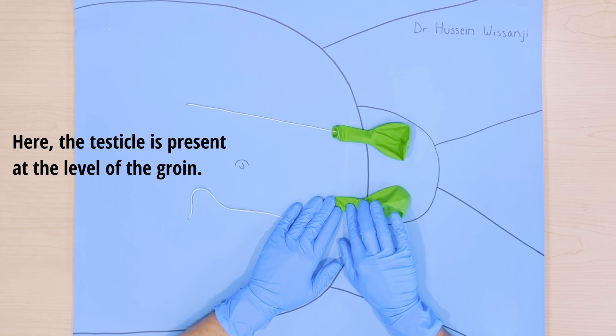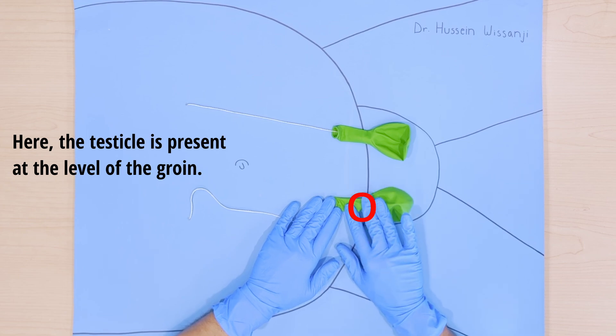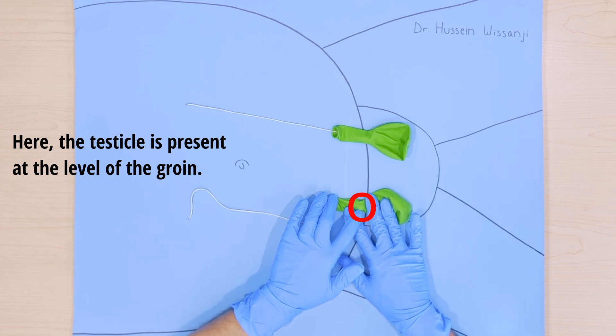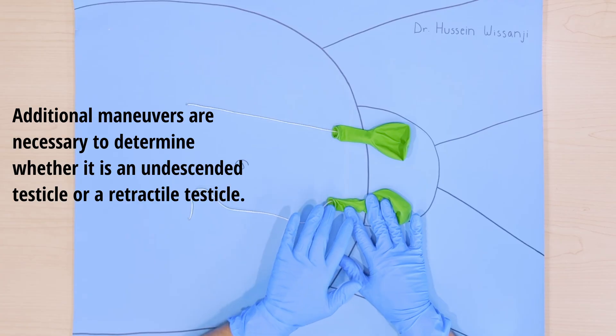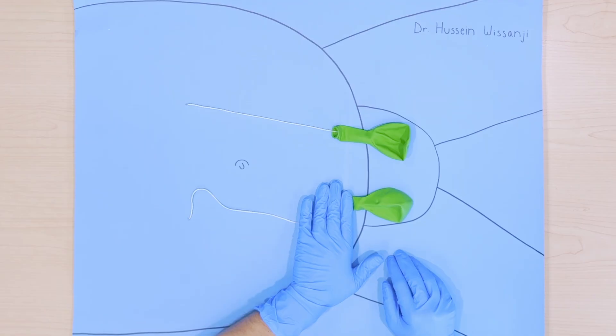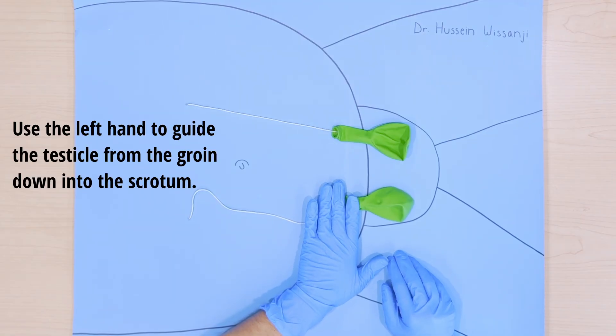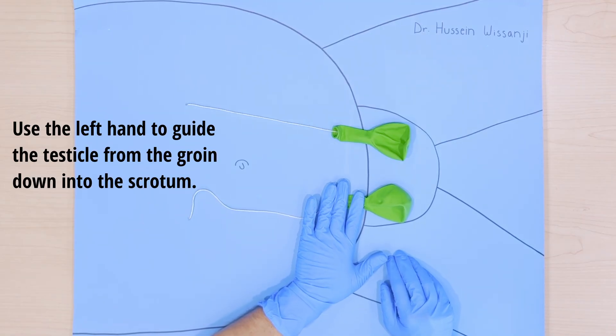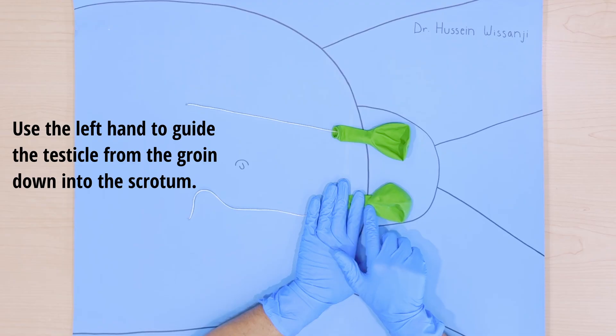I located the testicle in the inguinal region at this point, but now the question is, is this an undescended testicle that is located in the inguinal canal or a retractile testicle? The difference will lie in whether you can bring the testicle from the inguinal region to the scrotum. You'll use your left hand to gently sweep the tissues including the testicle from the inguinal region into the scrotum.